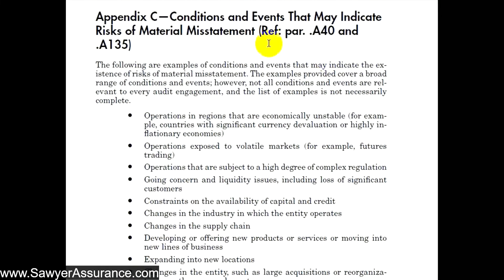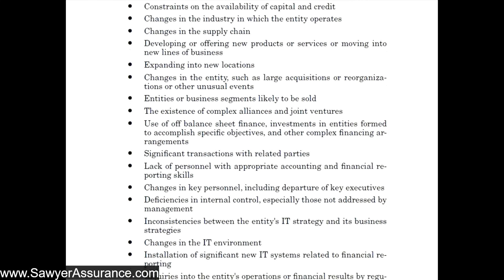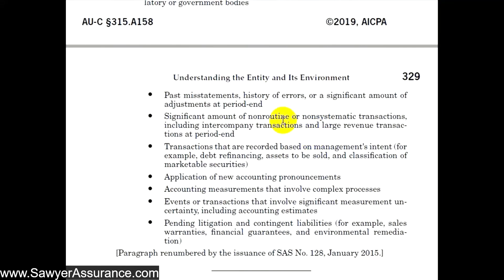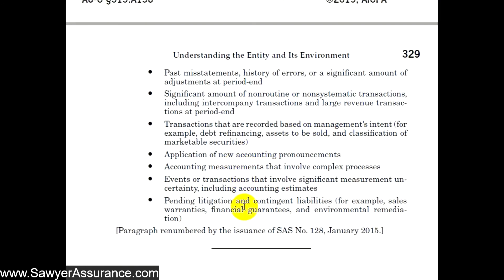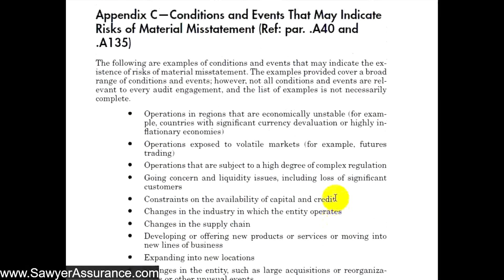Now we're down in Appendix C — conditions and events that may indicate risk of material misstatement. This isn't necessarily a complete list, but it gives us a good start on things to look for. It includes: operations and regions that are unstable, new locations, joint ventures, changes in the IT environment, non-routine or non-systematic transactions requiring a lot of estimating, new accounting pronouncements, pending litigation, and other related liabilities. This long list gives us a good start on things to brainstorm about in the audit.